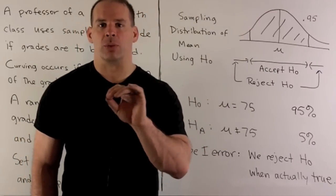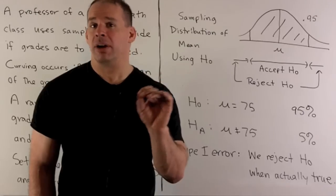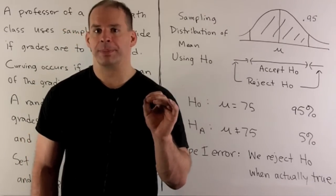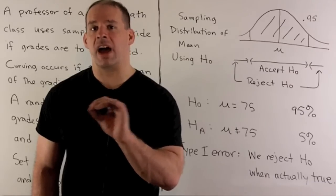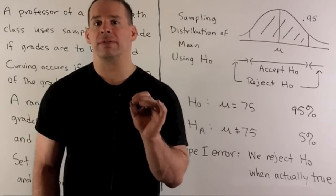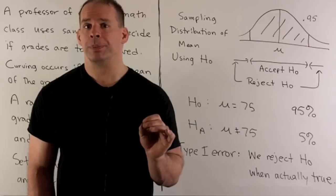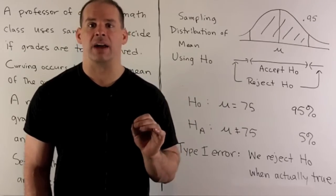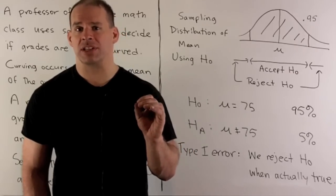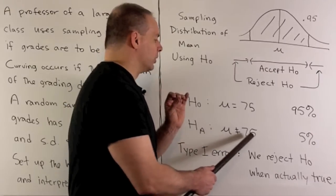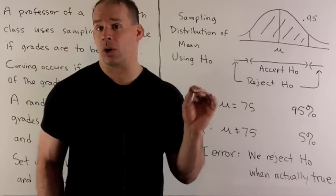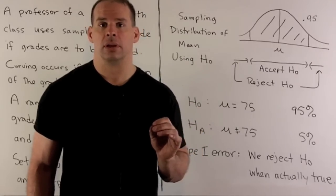Now, sometimes you'll see that written with inequalities, but really you should save them for the alternative hypothesis. Now, to get our alternative hypothesis, we have to note whether we're using a one tail or a two tail test. Here, the professor is going to curve if he believes the unknown population mean μ is greater than or less than 75. So here, we're gonna have two tails. That means my alternative hypothesis is going to be μ ≠ 75. If we were using one tail, the alternative hypothesis would have an inequality in it.